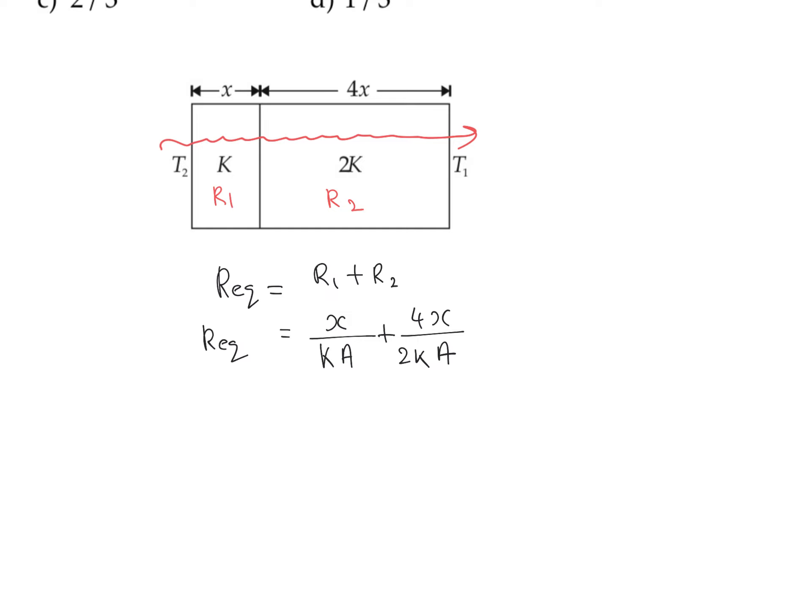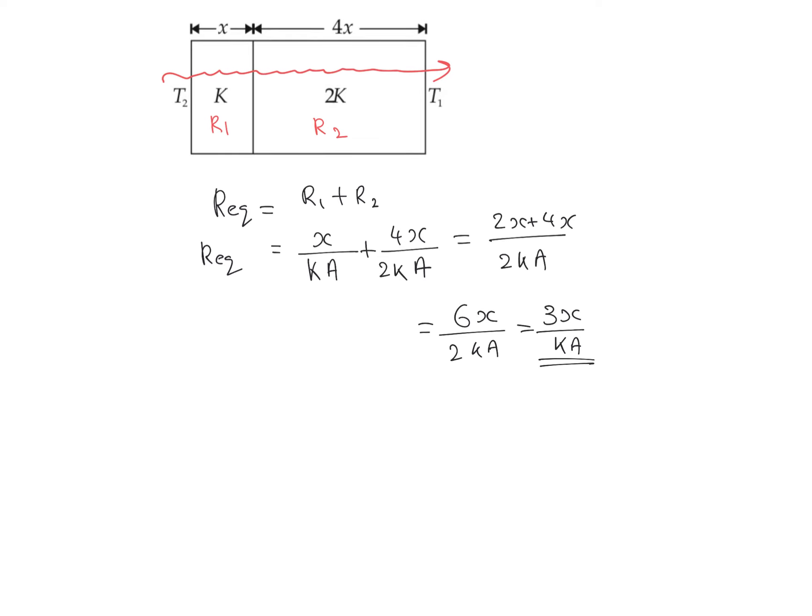The value of equivalent resistance is 2x plus 4x, which equals 6x/(2KA). When 2 and 6 get cancelled, we get 3x/(KA) as the value of equivalent resistance.